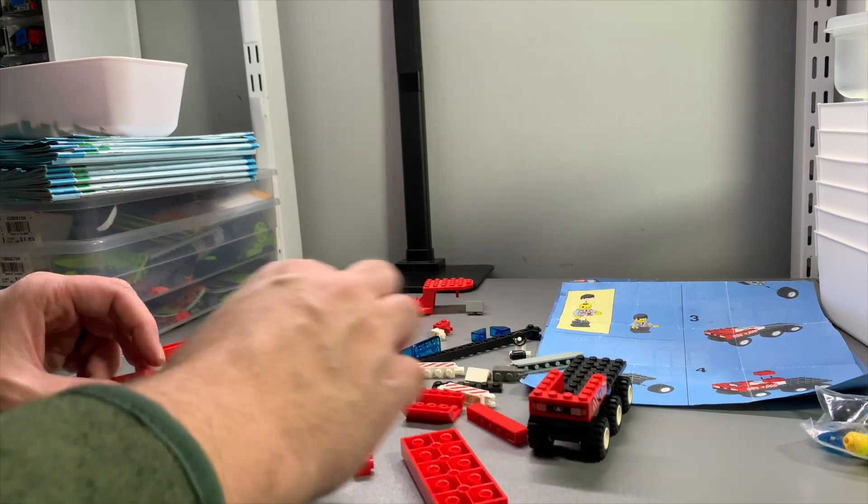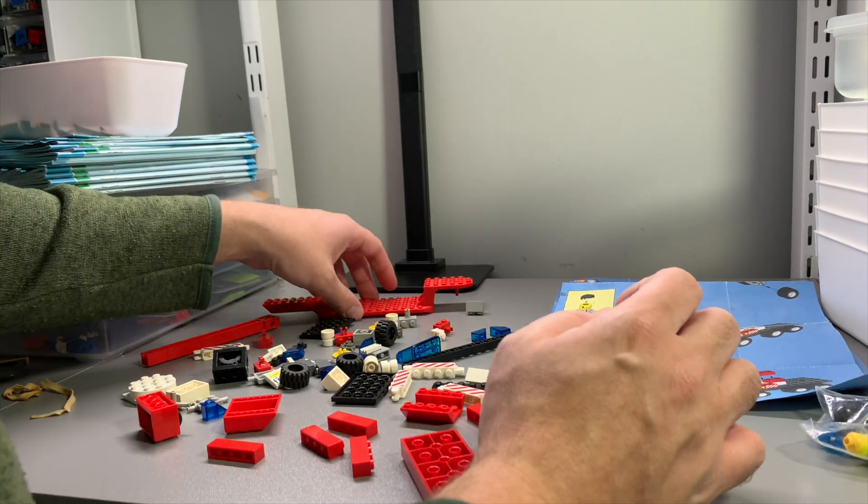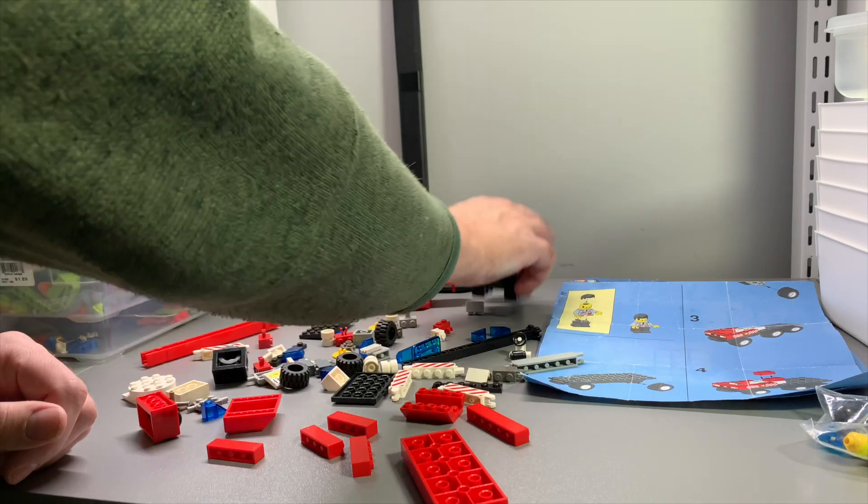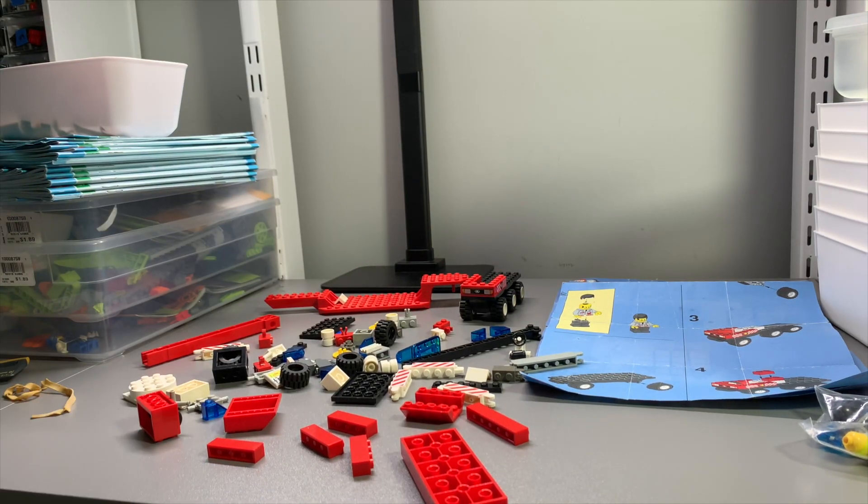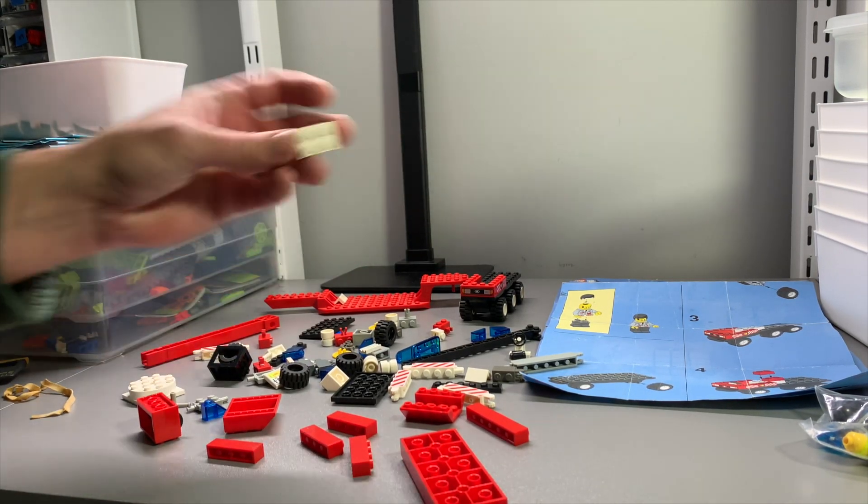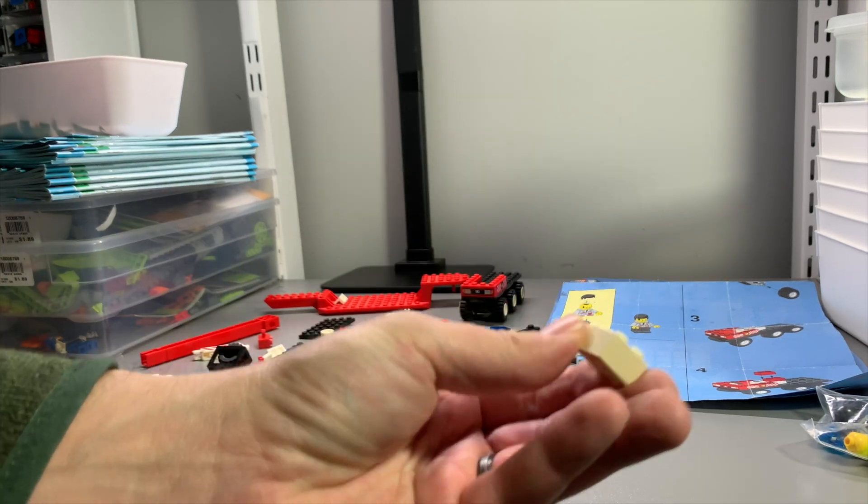He said as he noticed something is missing. Well, it's just a 2x3 brick, so that's not hard to replace. Oh, I wasn't even missing. It was right here. It's yellowed. We'll replace it.